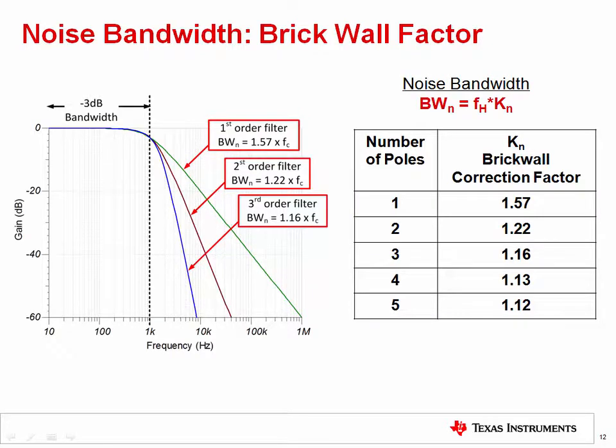Here we give a table of brick wall correction factors that can be used to calculate noise bandwidth. To convert the minus 3 dB bandwidth to the noise bandwidth, just multiply by the correction factor, k sub n. Notice that the brick wall correction factor begins to approach 1 as the number of poles increases. This makes sense since higher order filters have a steeper roll off, more like a brick wall. One thing to consider is that gain peaking can affect the noise bandwidth, so in practical circuits, the actual noise bandwidth may differ somewhat.